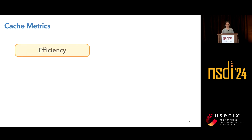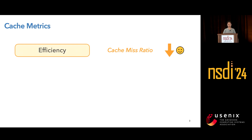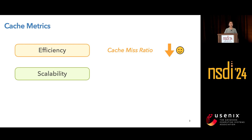Most cache eviction algorithms focus on improving efficiency, which is measured by cache miss ratio. A cache miss ratio is the fraction of requests not being served from cache — so the lower, the better. One major goal of designing a cache eviction algorithm is to achieve a low cache miss ratio. Also, scalability is another important cache metric. It is usually measured by the number of requests served by the cache per second — so the higher, the better.